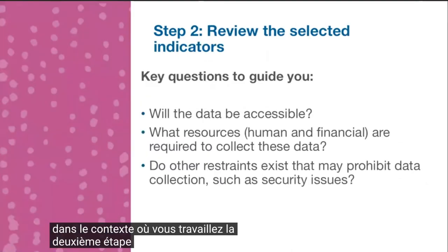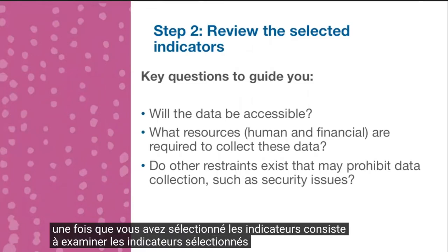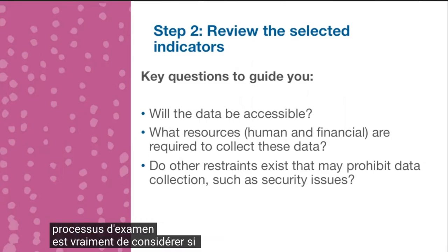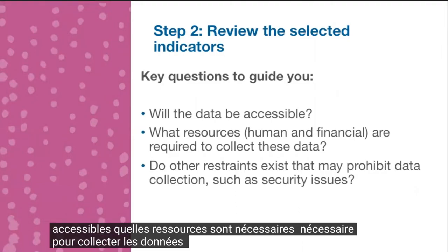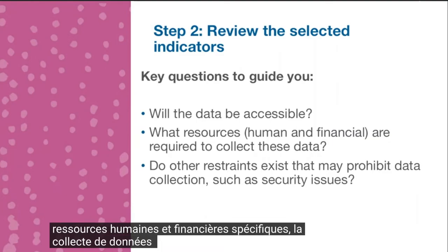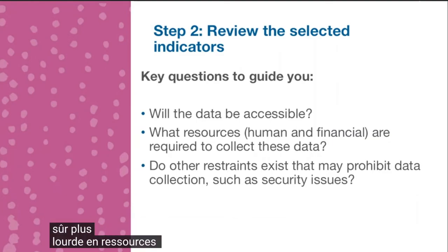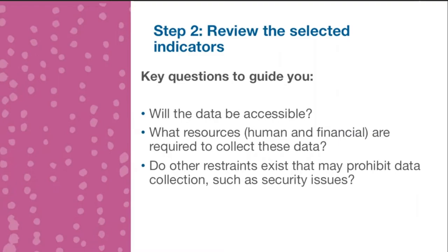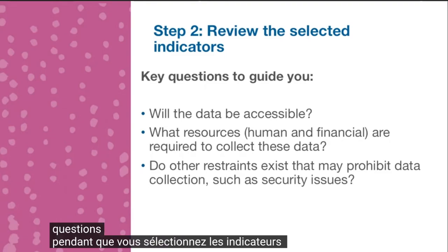The second step, once you have selected the indicators, is to review them. Key questions to guide the review process include: whether the data will be accessible, what human and financial resources are required to collect the data — noting that primary data collection will be more resource-heavy — and any other restraints in the context that might prohibit data collection, such as security issues. It's important to answer all of these questions to determine whether the indicators will be feasible in your context.